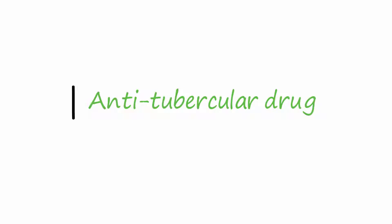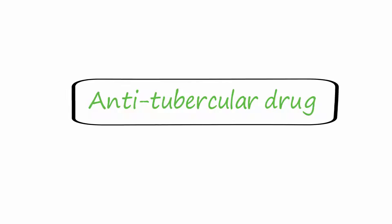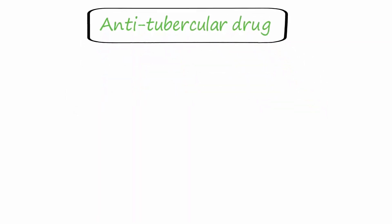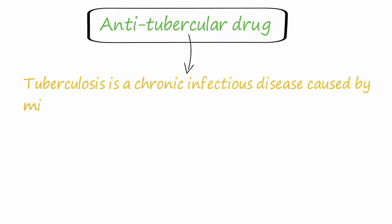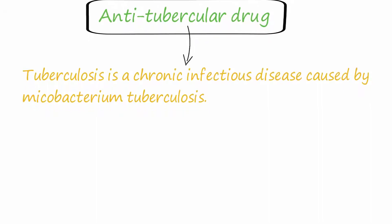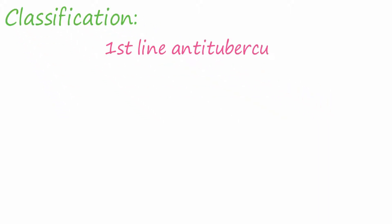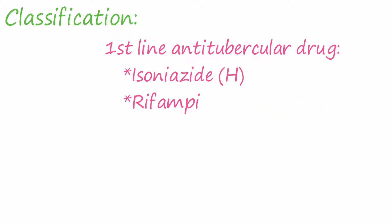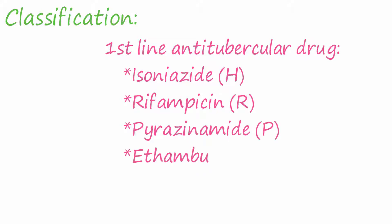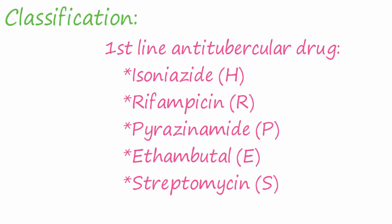Anti-tubercular drugs. Tuberculosis is a chronic infectious disease caused by Mycobacterium tuberculosis. Classification of anti-tubercular drugs includes first-line anti-tubercular drugs: isoniazid, rifampicin, pyrazinamide, ethambutol, and streptomycin.